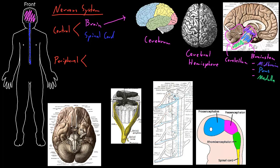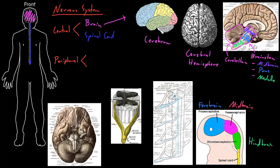Sometimes brain structures are referred to by the names of structures they develop from in the embryo. The very front part is called the forebrain, or prosencephalon. Behind that is the midbrain, or mesencephalon. And behind that is the hindbrain, or rhombencephalon. The forebrain becomes the cerebrum, the midbrain becomes just the midbrain portion of the brain stem, and the hindbrain becomes the pons, medulla, and cerebellum.